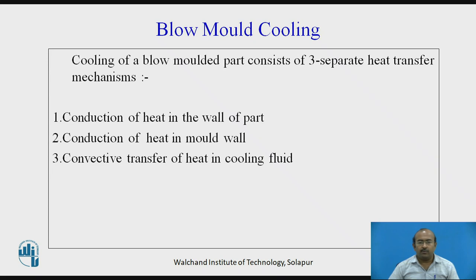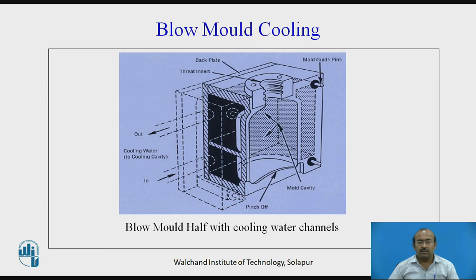Blow mold cooling. Cooling of a blow molded part consists of three separate heat transfer mechanisms: conduction of heat in the wall of the part, conduction of heat in the mold wall, and heat transfer to the cooling fluid. Here you can see the blow mold half with a cooling water channel — a sectional view showing where water enters and exits to cool down the mold.